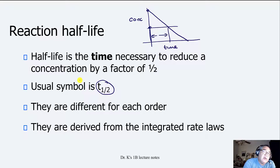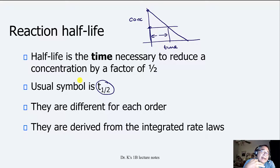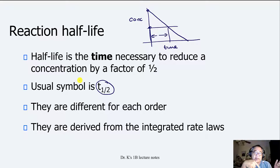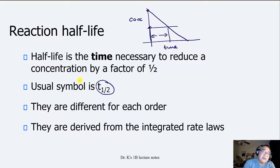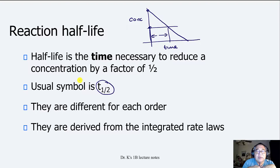These graphs all look different for different orders of reactions. You've seen a first-order already — I showed you that one earlier, and that's what I've drawn here. We're going to look at the first-order reaction now. The half-life can be used to determine the rate constant, and the half-life trend can be used to determine the order.